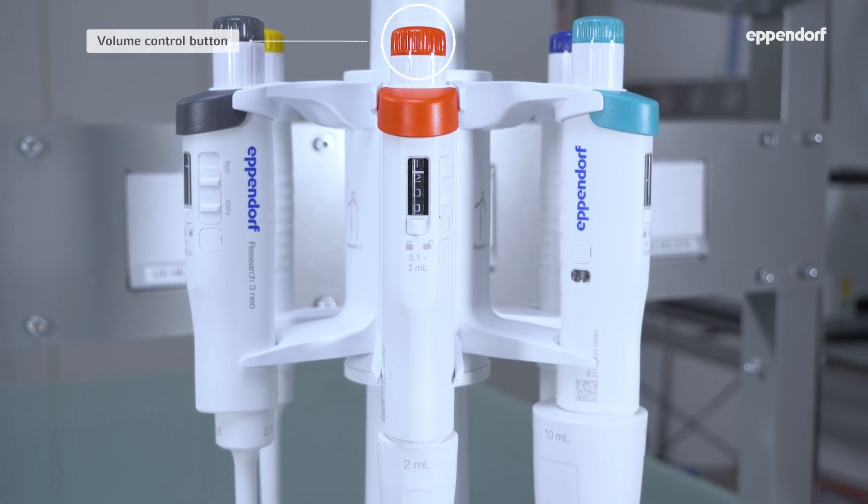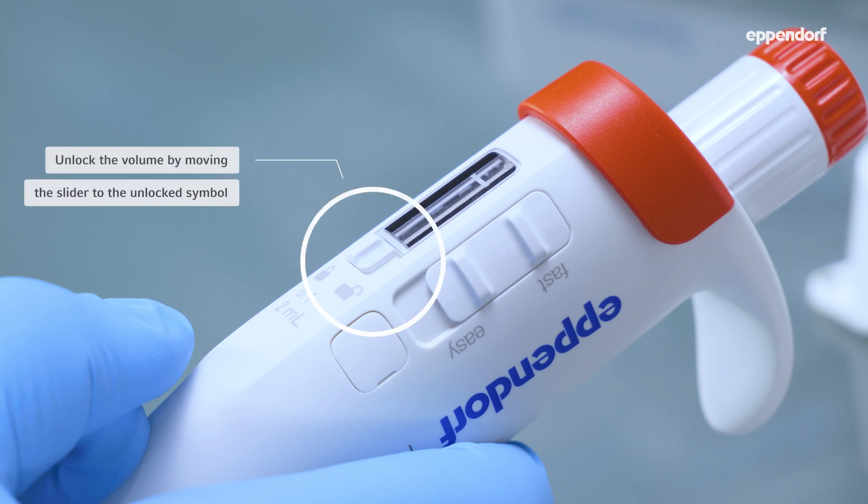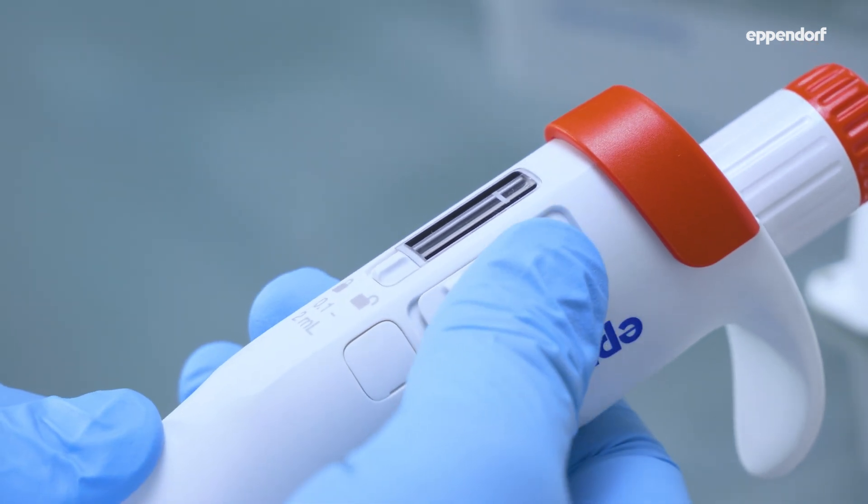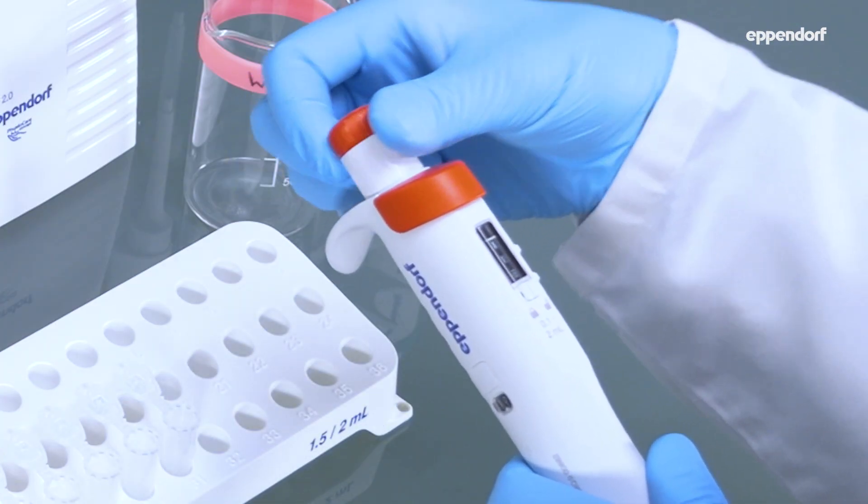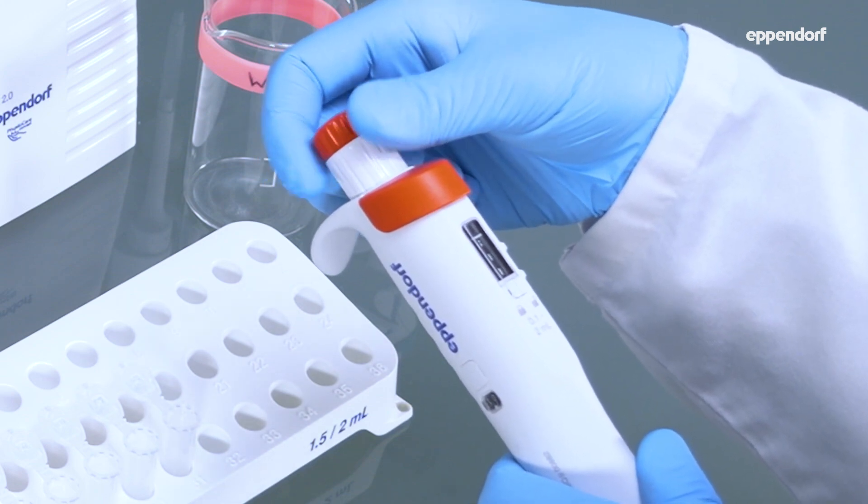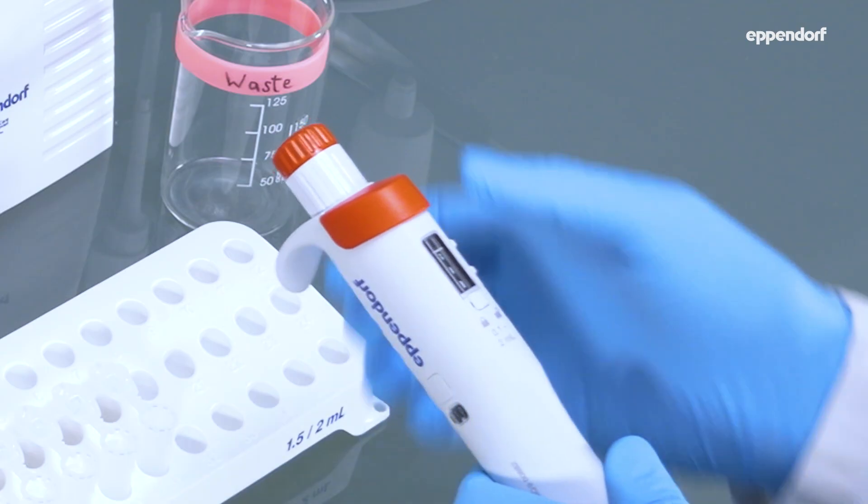Set the exact volume you want to pipette by turning the volume control button. In RESEARCH 3 pipettes, the innovative volume gear shift slider allows you to either fine-tune the volume with low resistance, or speed up volume changes with fewer rotations but a bit more effort.